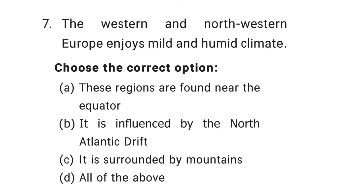The seventh question is: Western and Northwestern Europe enjoys mild and humid climate. Choose the correct option. Option A: these regions are found near the equator. Option B: it is influenced by the North Atlantic Drift. Option C: it is surrounded by mountains. The correct answer is option B — it is influenced by the North Atlantic Drift.